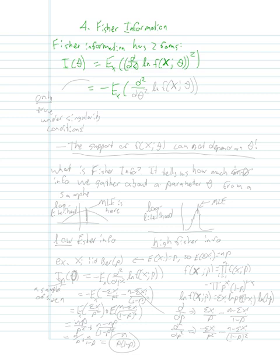Equivalently, this Fisher info is equal to negative expected value with respect to X, the second derivative, the LN of PDF, the density, you don't have to square it. Note, this second equality is only true under singularity conditions.